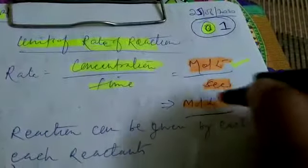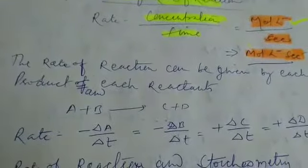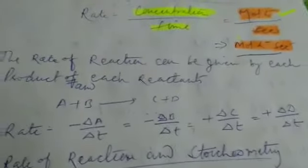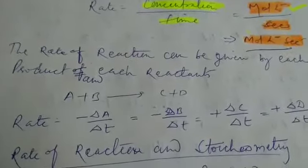So the unit of rate of reaction will be mole per liter per second. The rate of reaction can be given by each of product and each of reactants like this.